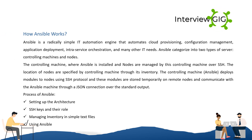How Ansible Works: Ansible is a radically simple IT automation engine that automates cloud provisioning, configuration management, application deployment, intra-service orchestration, and many other IT needs. Ansible categorizes into two types of servers: controlling machines and nodes. The controlling machine is where Ansible is installed, and nodes are managed by this controlling machine over SSH. The location of nodes is specified by the controlling machine through its inventory.